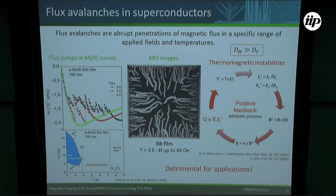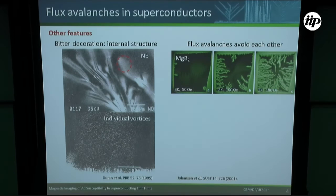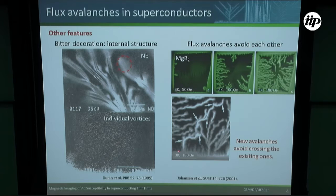Flux avalanches are detrimental for applications. When a flux avalanche is triggered, the temperature can locally exceed the critical temperature. After triggering and cooling down, it's possible to see that the flux avalanches present an internal structure, and the flux density is not uniform along the flux avalanche. Another important feature is that they avoid each other: one is triggered here, and when a nearby region senses the increased flux, another avalanche appears while the first becomes frozen. When a new avalanche is triggered, it avoids crossing the existing ones.